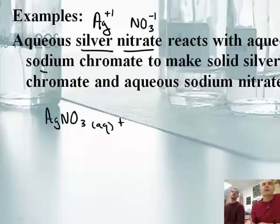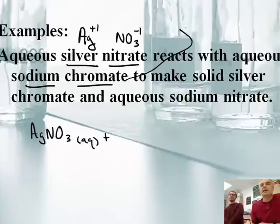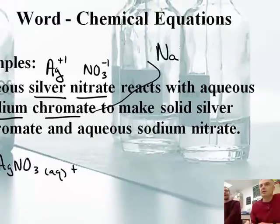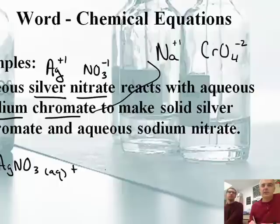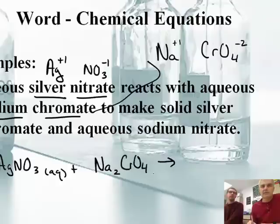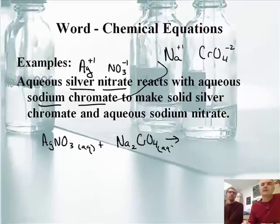It reacts with aqueous sodium chromate. Sodium is Na, and its charge is positive one. And then chromate is CrO4 negative two from the back of your periodic table or your polyatomic ion list. Those charges don't add up to zero, so we need two sodiums — Na2CrO4, aqueous.